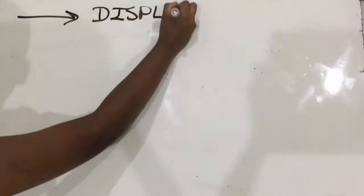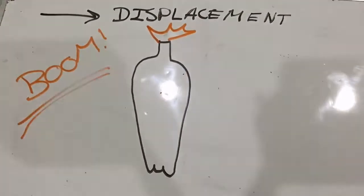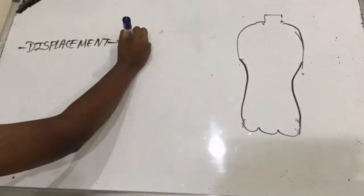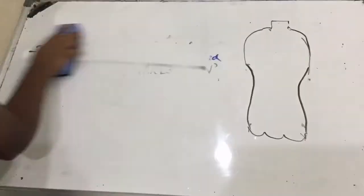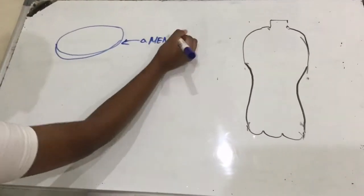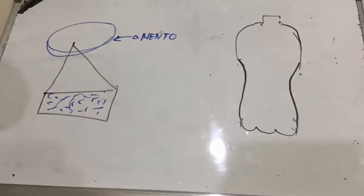Mentos plus coke equals displacement. Displacement is a physical reaction called nucleation. The surface of a mentos is very rough and contains pores which are called nucleation sites.